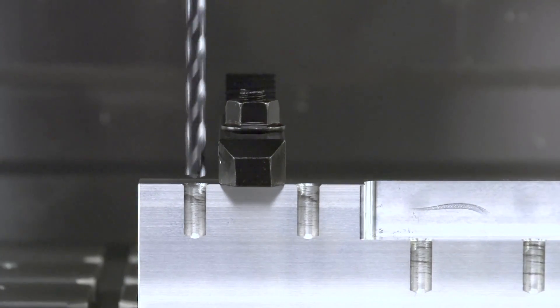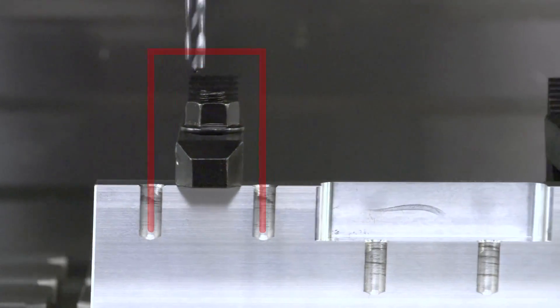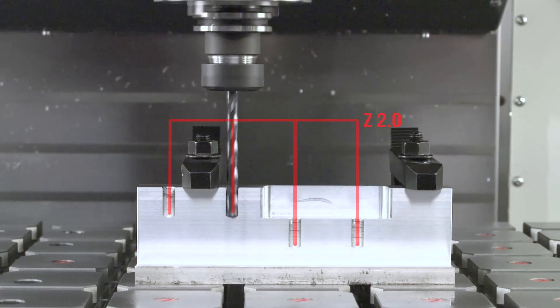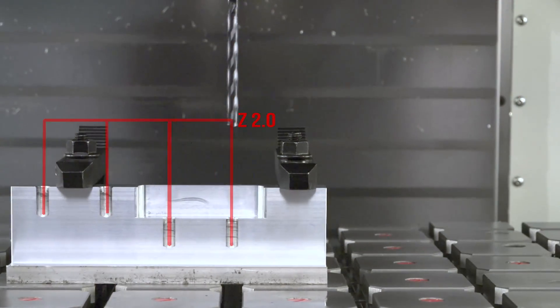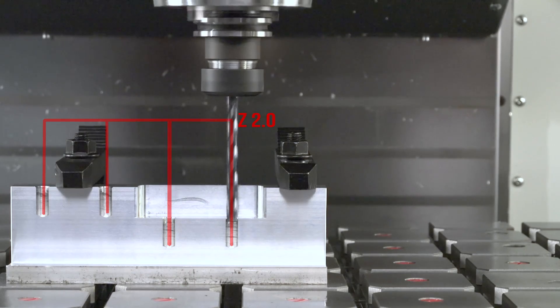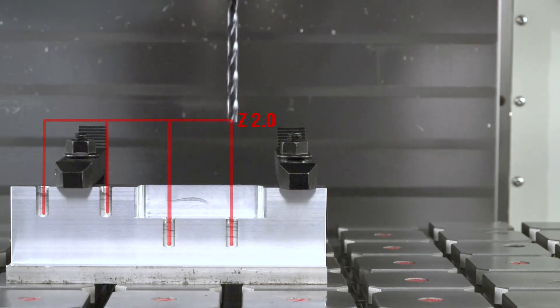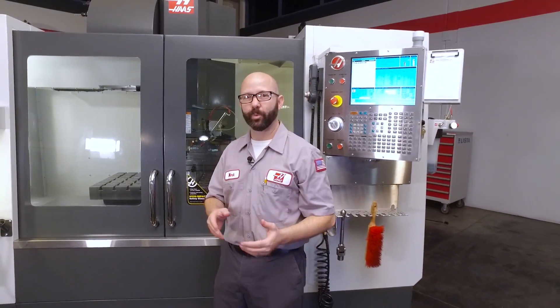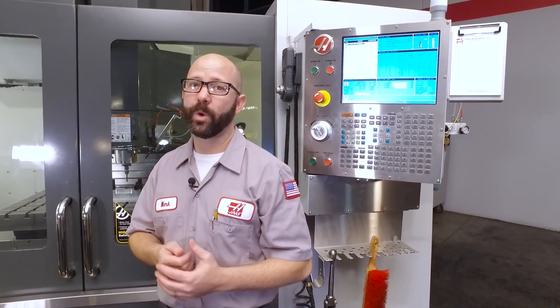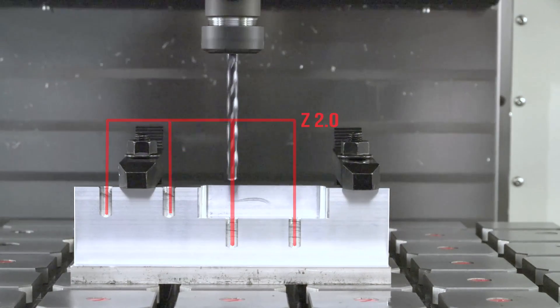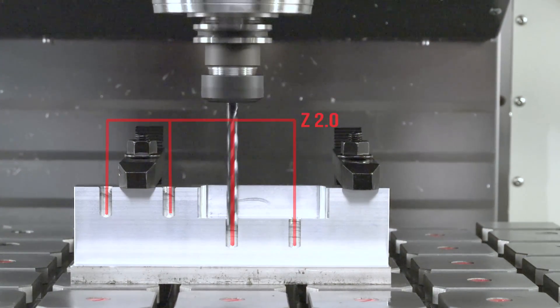Well, we've altered our program, and now our tool is hopping up and over our clamps and returns to that same Z 2.0 starting position after each drilled hole. Well, that worked great. We dodged those clamps and we didn't break our tool, but we wasted a lot of time cutting air on those last two holes. We're better than that.